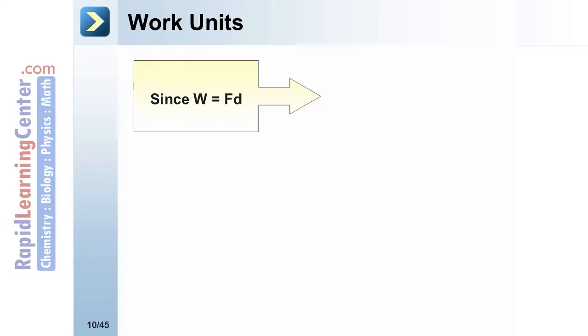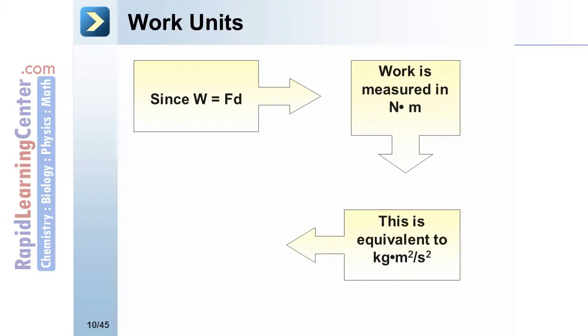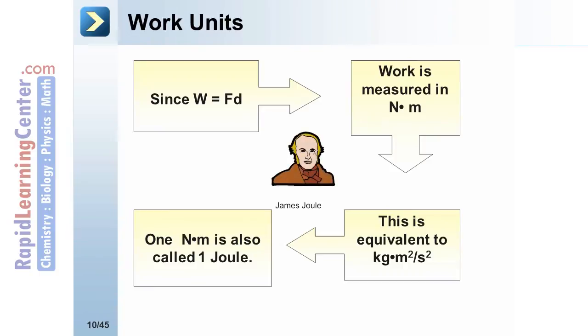Work units. Since W equals F times D, work is typically measured in newton meters in the metric system. This is equivalent to kilogram meter squared per second squared. However, this is also called one joule, named after James Joule. Thus, a joule is our typical unit for work.